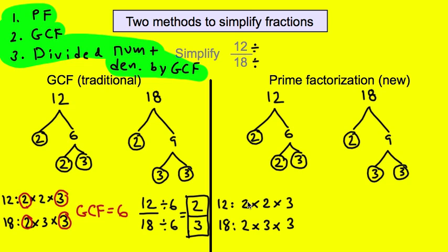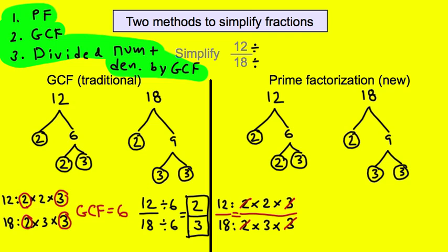Now we talked about the prime factorization canceling out the 1s — here we have our opportunity. We see this as the fraction 12 over 18: 2 times 2 times 3 is 12, and 2 times 3 times 3 is 18. Within that there's a whole bunch of 1s, and we're going to cancel them out. 2 over 2 is a 1. Where in the GCF method we circled things in common, this time we cross them out. They have the 2 in common and the 3 in common. Whatever is left over is the fraction in its simplest form: 2 over 3.